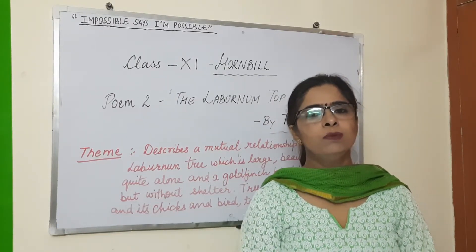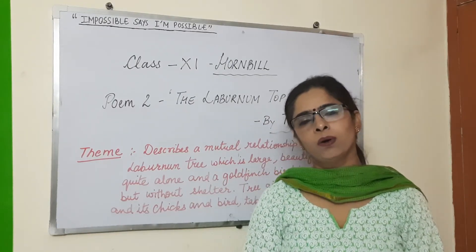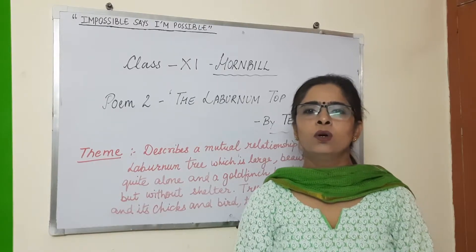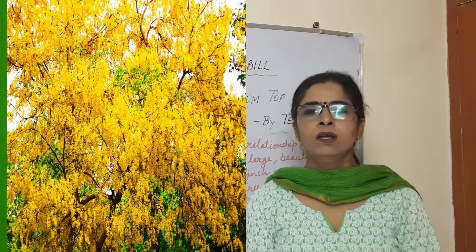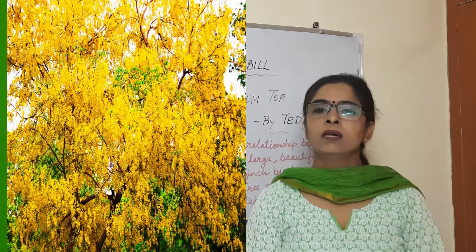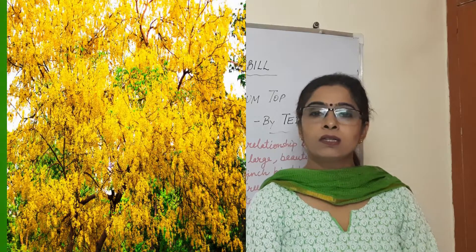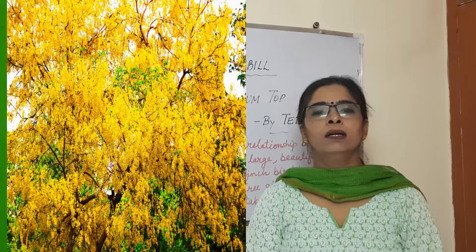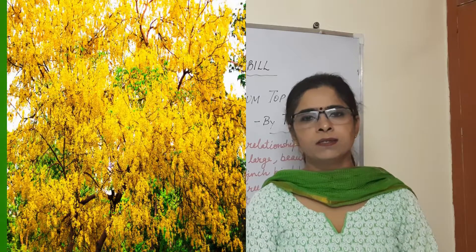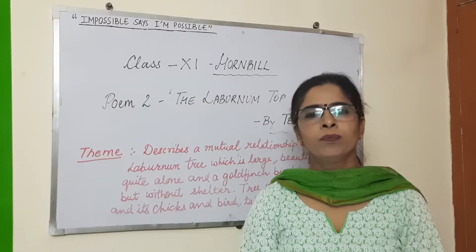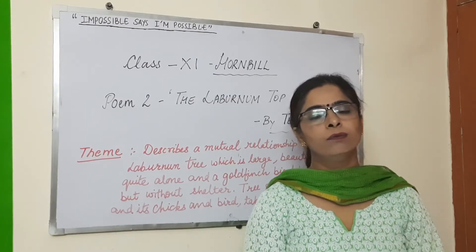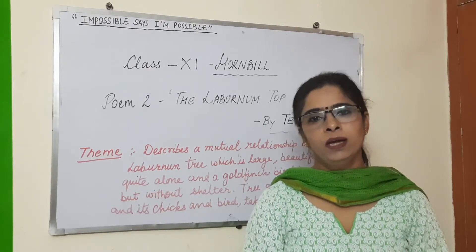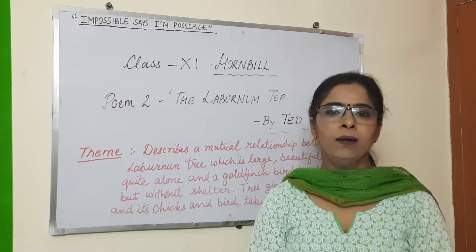The laburnum tree — which we normally call 'Amaltas' — is a very big tree with yellow flowers and on top it has seeds, and those are poisonous seeds. It is a very beautiful tree. So we can say that this tree is very beautiful and huge, but it is alone.